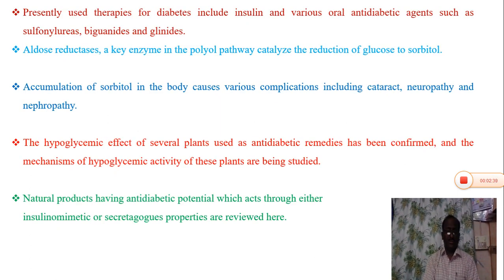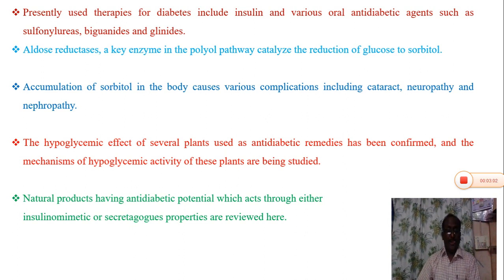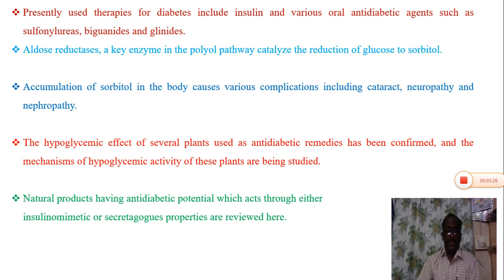Presently, various therapeutic therapies are available for diabetes treatment, which includes insulin and various oral anti-diabetic agents such as sulfonylureas, biguanides, and glinides. Many of them have a number of serious adverse effects. Therefore, the research for more effective and safer hypoglycemic agents is one of the important areas of present investigation. Aldose reductase, a key enzyme in the polyol pathway, catalyzes the reduction of glucose to sorbitol. Accumulation of sorbitol in the body causes various complications including cataracts, neuropathy, and nephropathy.